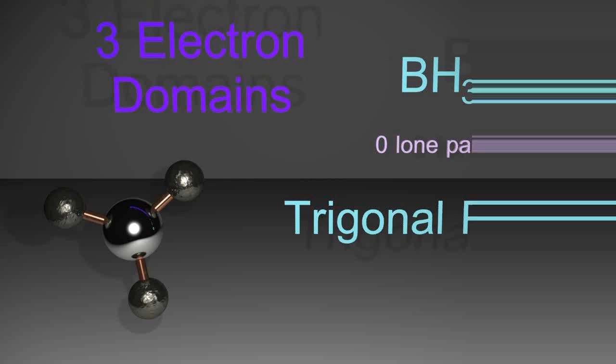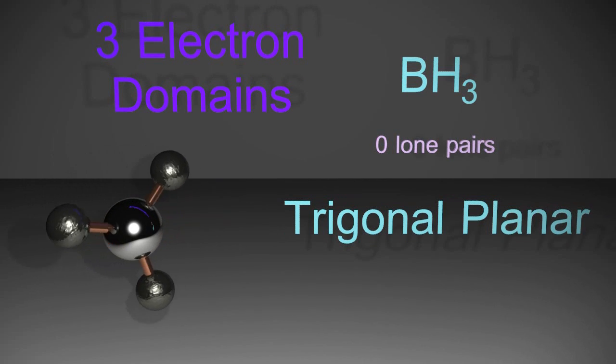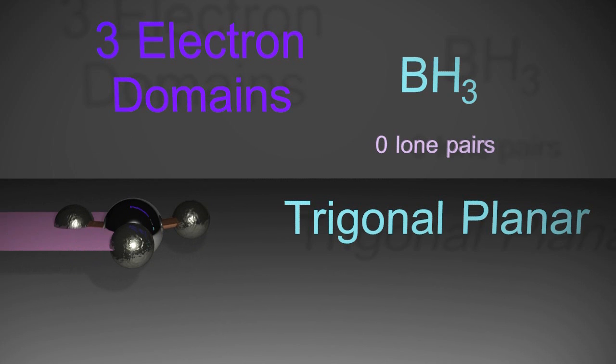Now with three electron domains, the three electron domains again try to get as far away from each other as possible, so they're going to take up a triangular shape, and that triangular shape is flat, which gives the word planar in the name.